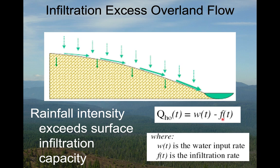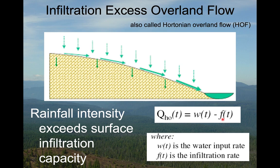Infiltration excess overland flow was one of the first conceptualizations of how water gets to streams. The pivotal work was done by Robert Horton in the 1930s, so we also call this Hortonian overland flow, or HOF. The term 'infiltration excess overland flow' is preferred because it describes the process rather than just who it's named for.